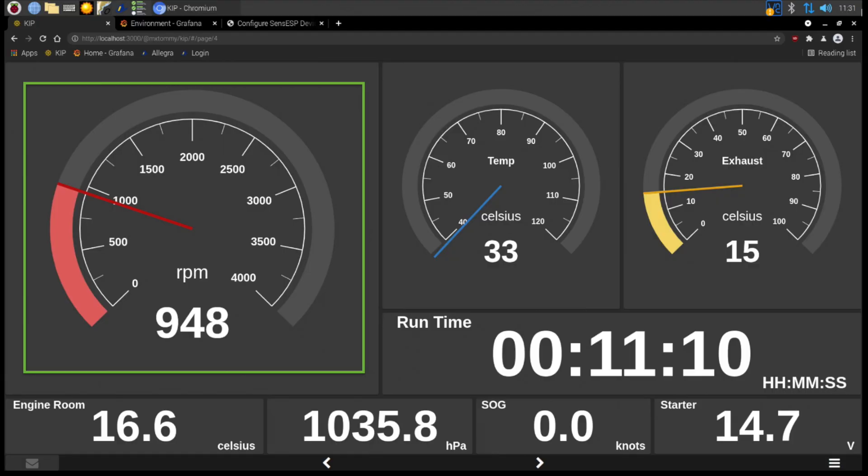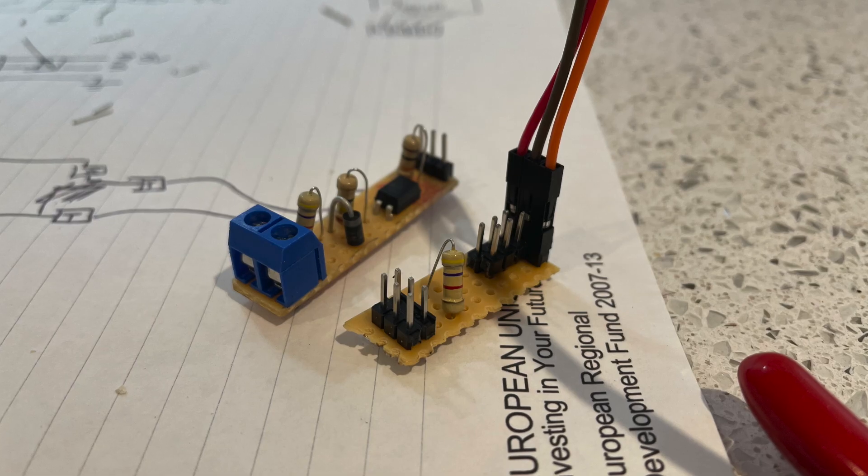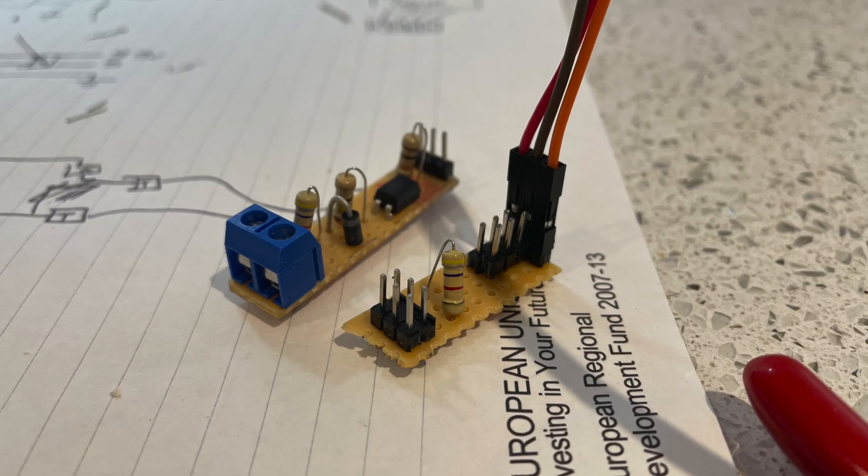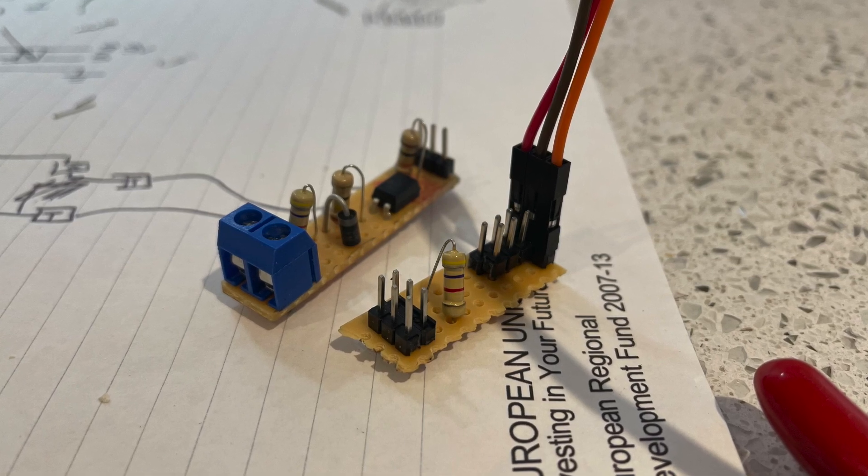If we now take a look at the exhaust sensor, which is just a digital one-wire sensor. These are really easy sensors to use and I've used them on the Raspberry Pi. You've basically got three wires - a negative, a positive, and a signal - and the resistor goes between the positive and the signal.